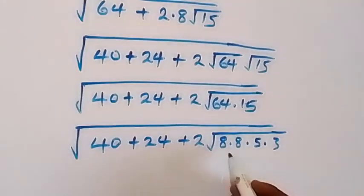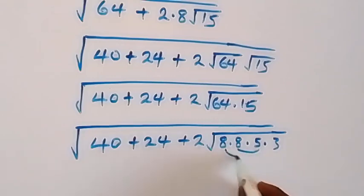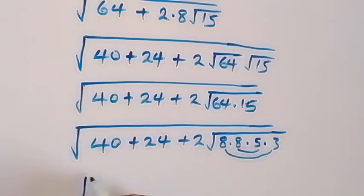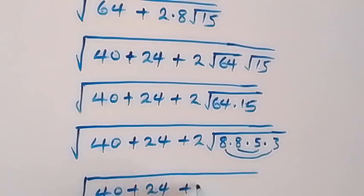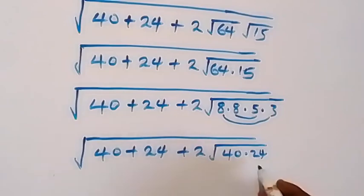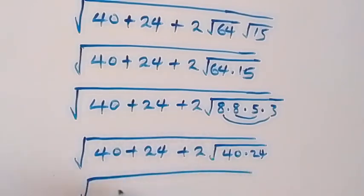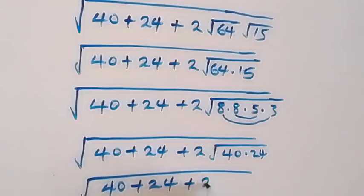From here we can group 8 times 5 and 8 times 3 together. And 8 times 5 is 40, and 8 times 3 is 24. So we have square root of 40 plus 24 plus 2 root of 40 times 24. This separates as square root of 40 plus 24 plus 2 root 40 times root 24.